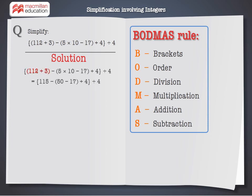112 plus 3 is 115. In the second bracket, apply the BODMAS rule again. So we do the multiplication first, i.e. 5 times 10 is 50. Next, we do the subtraction: 50 minus 17, i.e. 33.